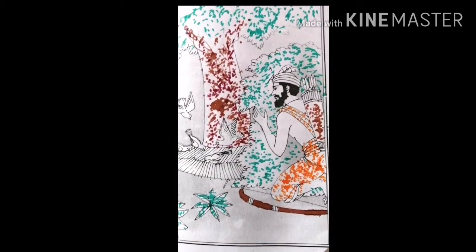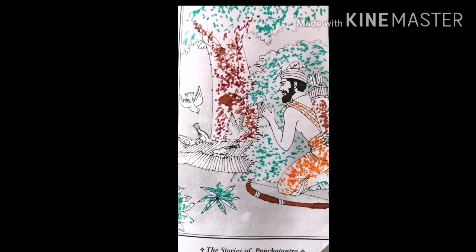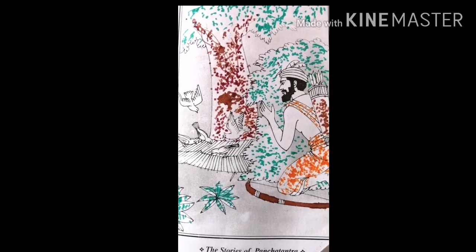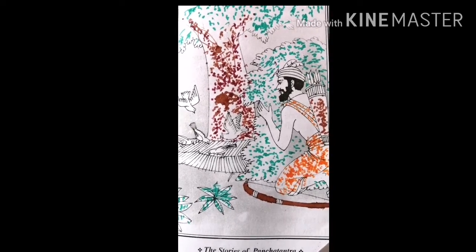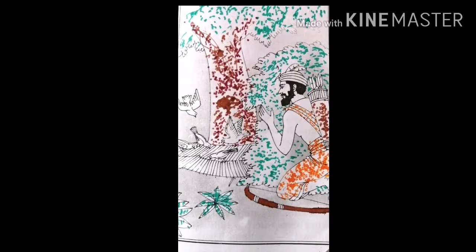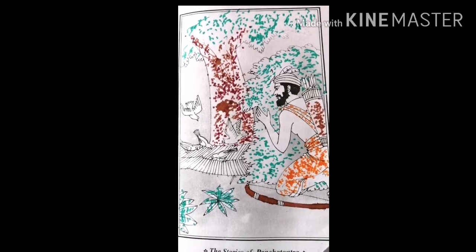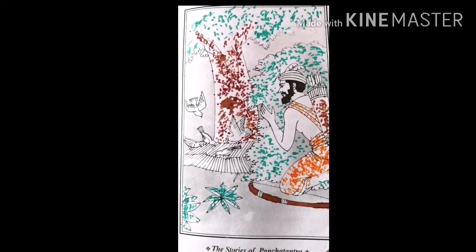The rat understood the truth in the words of the king dove and praised his nobleness. First he started nibbling at the net to save the other doves and at last he freed Chitragreeva. All the doves thanked the rat and flew up into the sky.